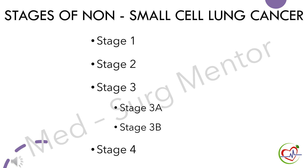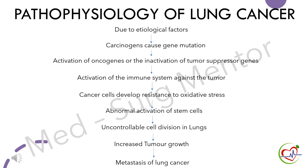Pathophysiology of lung cancer: due to etiological factors like carcinogens or genetics, gene mutation occurs, followed by activation of oncogenes or inactivation of tumor suppressor genes. As a result, the immune system gets activated as a normal defense mechanism. Gradually, cancer cells develop resistance to oxidative stress, enabling them to overcome the immune system. At the next stage, there is abnormal activation of stem cells, leading to uncontrollable cell division in the lungs, resulting in increased tumor growth. Ultimately, cancer cells invade nearby organs, which is called metastasis.